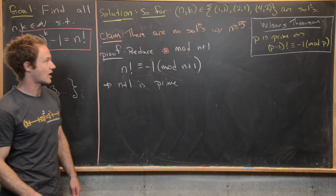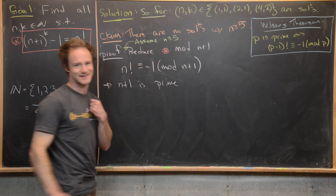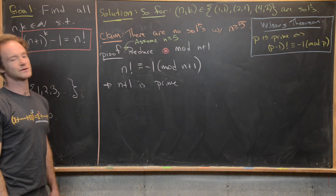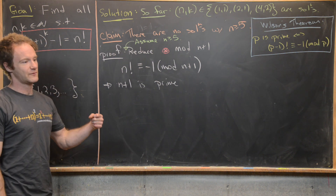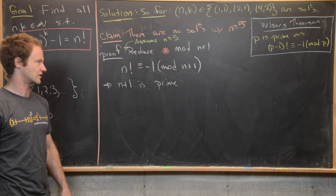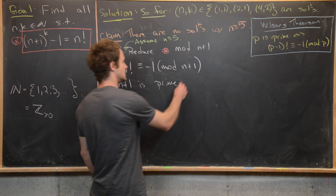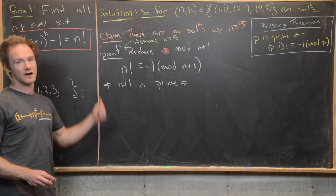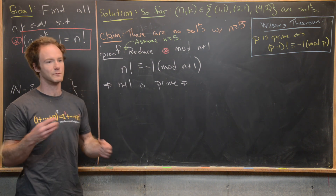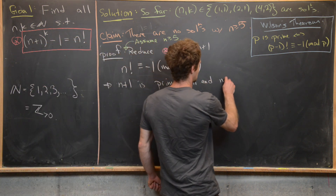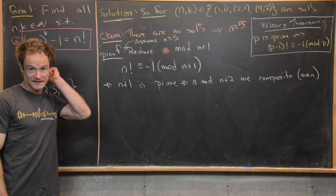Since n+1 is prime and n ≥ 5, we have n+1 ≥ 6, meaning n+1 ≥ 7. So n+1 is an odd prime, since the only even prime is 2. That tells us that both n and n+2 are composite — in fact they are both even and composite, being one away from an odd prime.